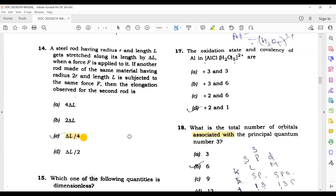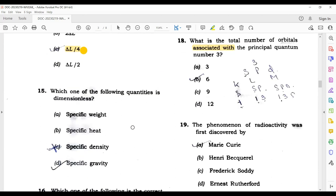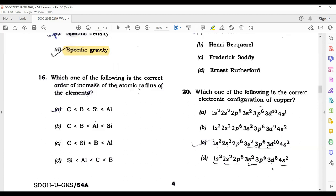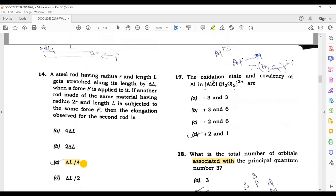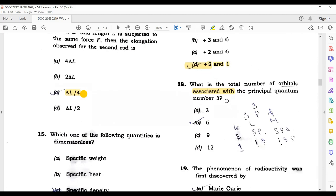Which one of the following quantities is dimensionless? Simple - specific gravity. Here you have to arrange them on the basis of their atomic radius. We know boron, carbon, nitrogen - the size decreases, so this is your correct answer. And the oxidation state and covalency of aluminum in AlCl(H2O)5 2+ is plus 3 and 6.